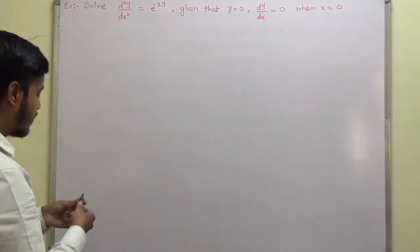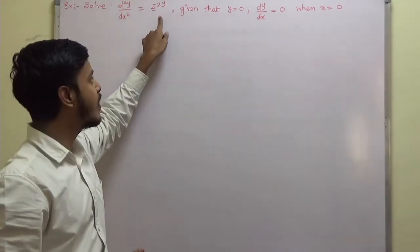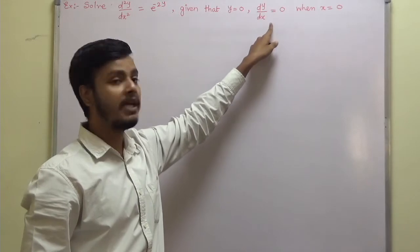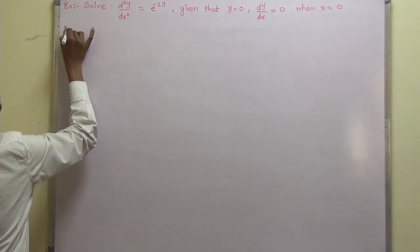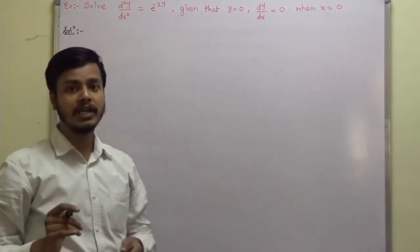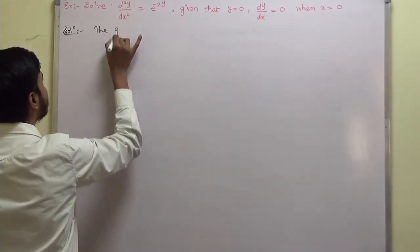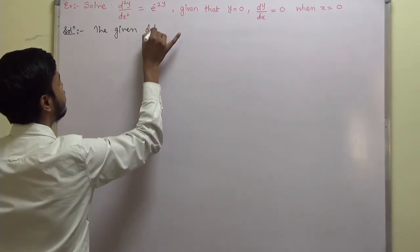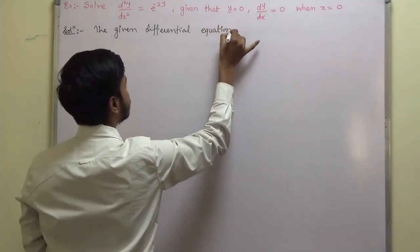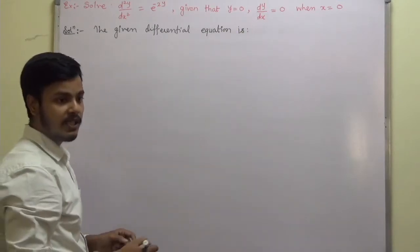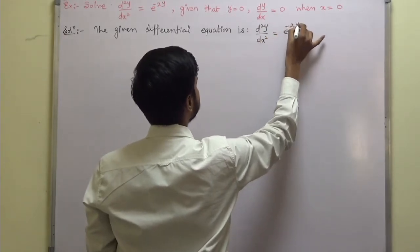Let us see what this problem is. The problem says: solve d²y/dx² = e^(-2y), and we are given a condition that we will make use of for getting the value of the arbitrary constants. The very first step of the working rule says to write the given differential equation, which is d²y/dx² = e^(-2y).